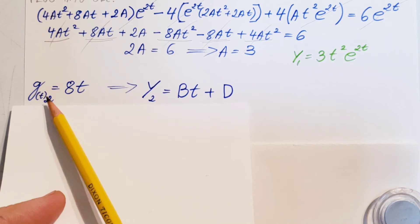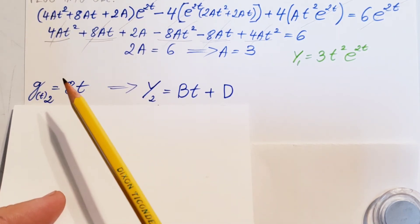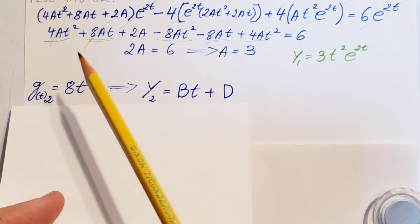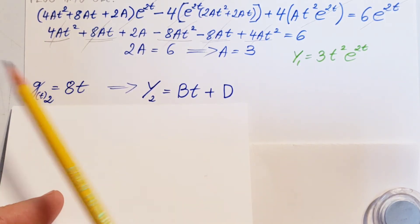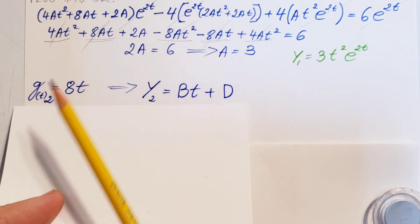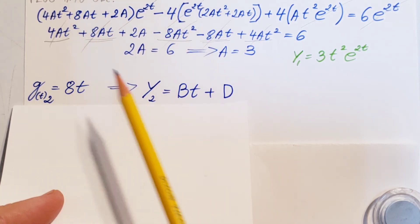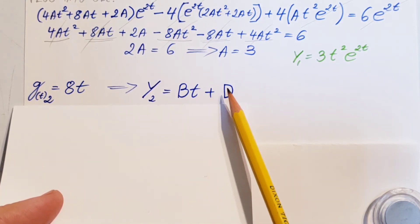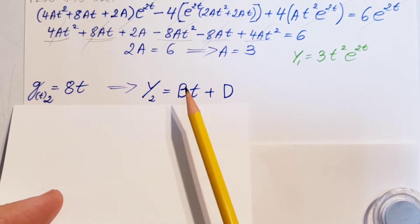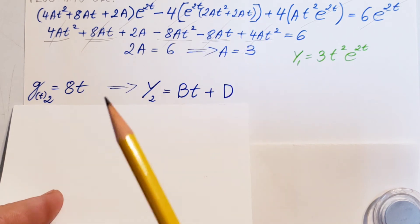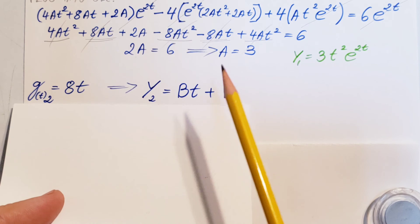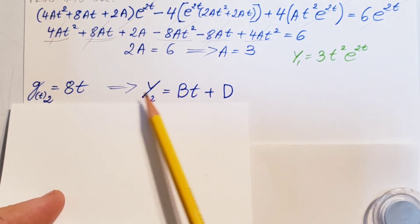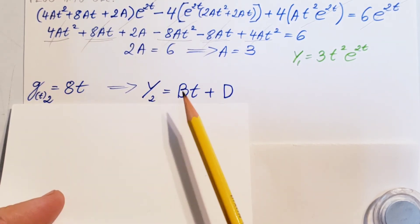I'm gonna call it gt2 equals 8t, the second term that we have on the right hand side of the equation. Now, I have to guess something for this one. From the same table, like I've shown, now we're working with only a polynomial. Therefore, this will be my guess. y2 equals Bt plus D. I could have picked C over here, just to have the letters nice and in order, but I'm using C already in the homogeneous solution, c1 and c2. So, just to don't mix them up, let's keep it and go with D. So, my official guess for this term, Bt plus D.